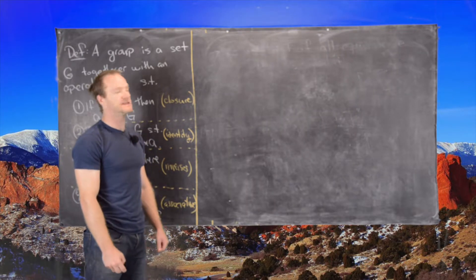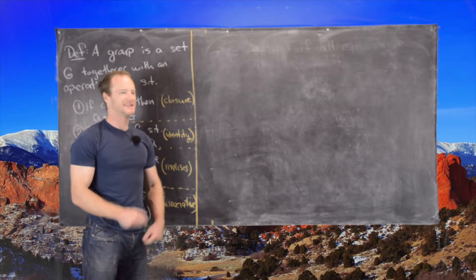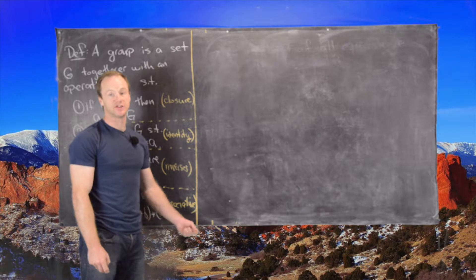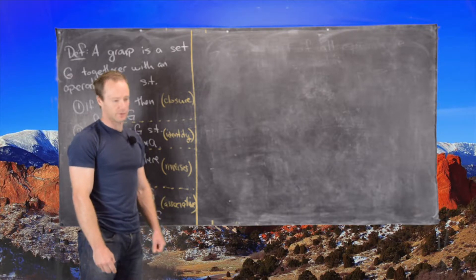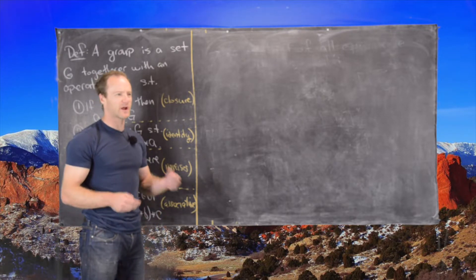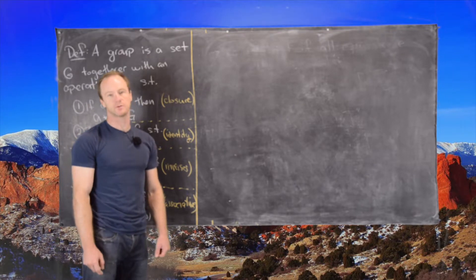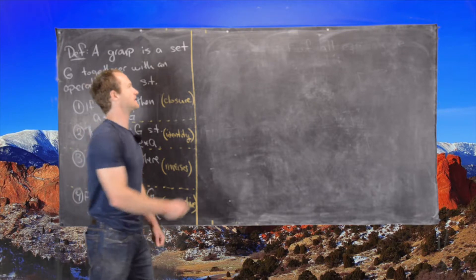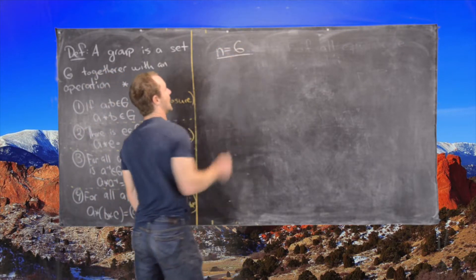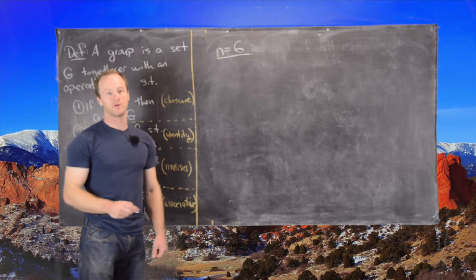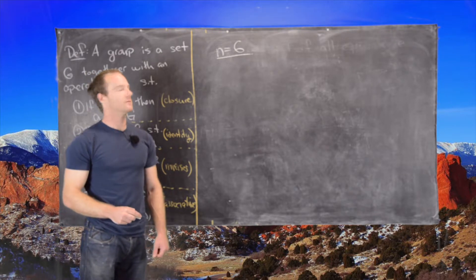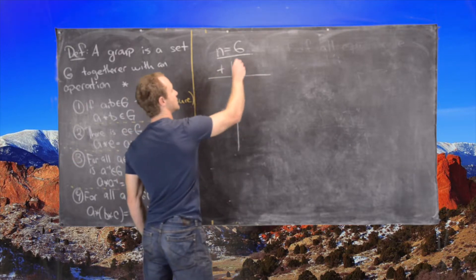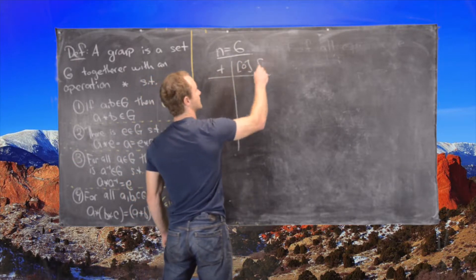Okay, so previously we defined Z_N and we stated the fact and waved our hands at the reason why Z_N with an addition that we defined was a group. And then we raised the question of which multiplication will that also be a group. So as an example, I want to set N equal to 6 and then make an addition table and a multiplication table modulo 6. So in other words, I have an addition table, so I need all my equivalence classes.